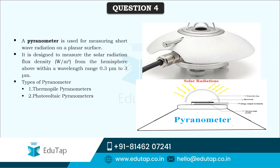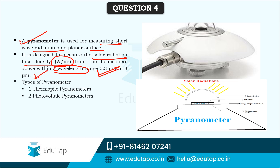A pyranometer is designed to measure the solar radiation flux density from the hemisphere above on a planar surface, within the wavelength range of 0.3 micrometers to 3 micrometers. There are two major types of pyranometers: the thermopile pyranometer and the photovoltaic pyranometer.